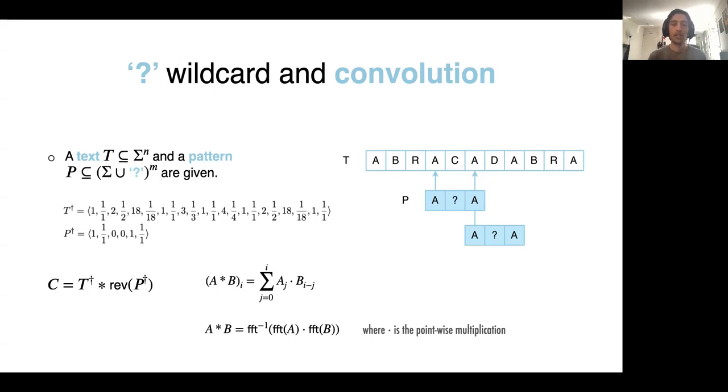The convolution of these two arrays gives us the ability to check for matches. For example, if you want to check if index i is matched, we can check if the summation of these multiplications in the definition of convolution is equal to 2 times the number of non-wildcard characters of pattern. They show that if this is not a match, this equality doesn't hold.